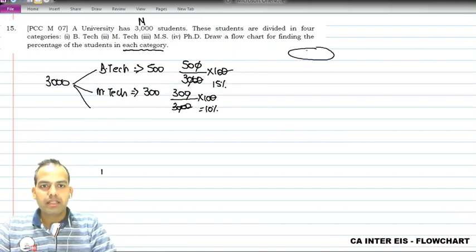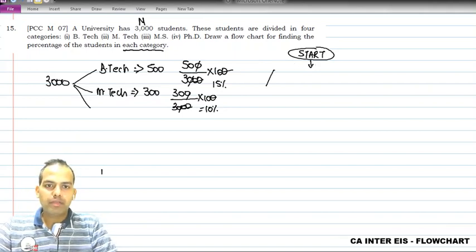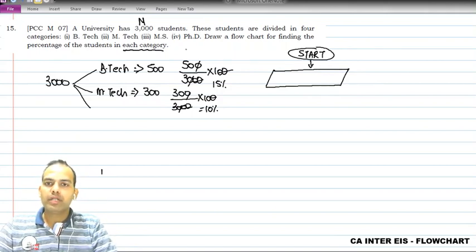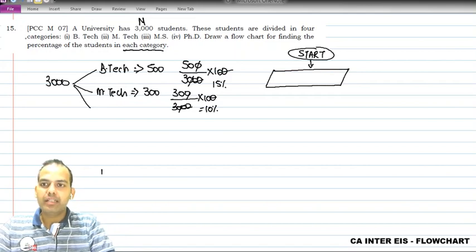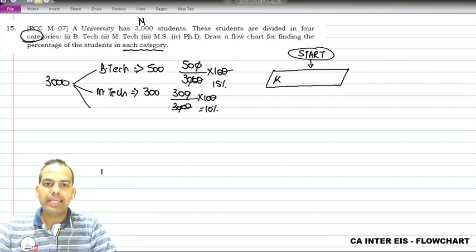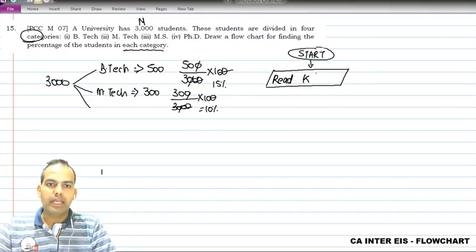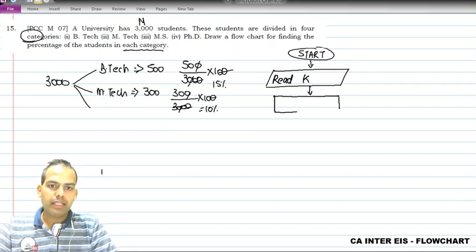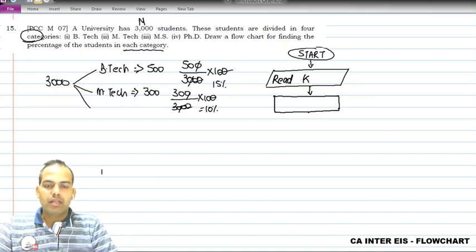Let me start the flowchart. First you will have a START box, then an input block. The input is the number of students - 3000. We need to understand which category each student belongs to, so we read k. Data is already there, we need to find out k - so 'read k'.